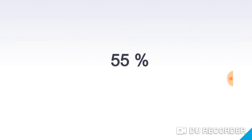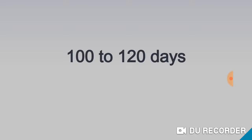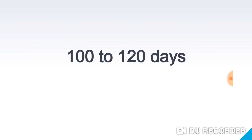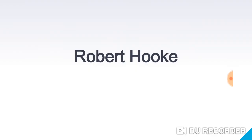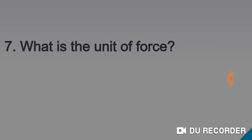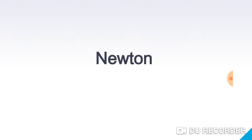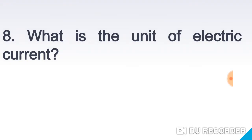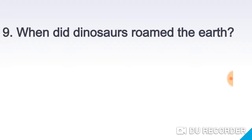What is the lifespan of RBC? 100 to 120 days. Who discovered the cell? Robert Hooke. What is the unit of force? Newton. What is the unit of electric current? Ampere. When did dinosaurs roam the earth? About 180 million years ago.